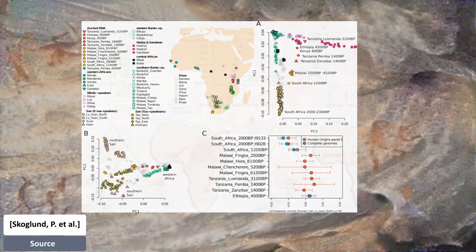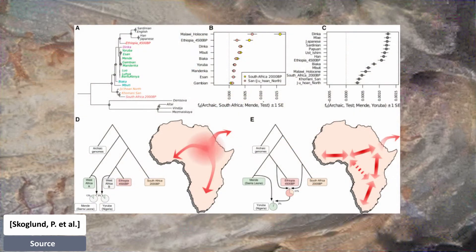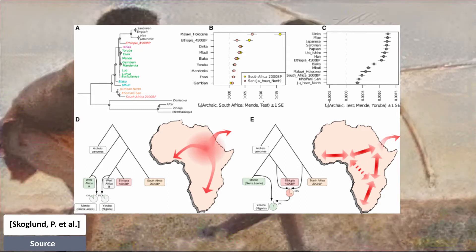Previous studies have suggested that the primary ancestry in Khoisan is from a lineage that separated from all other lineages represented in modern humans today, before the latter separated from each other. But the researchers of this paper propose a couple of alternative models. The first proposes that present-day Western Africans harbor ancestry from a basal African lineage that contributed more to the Mende than to the Yoruba, with the other source of Western African ancestry being related to Eastern Africans and non-Africans.